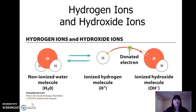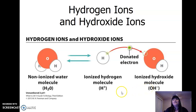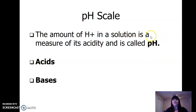pH talks about acidity — how basic or acidic a solution is. Here's a water molecule, HOH or H2O, with two hydrogen atoms and an oxygen. The hydrogens and the oxygen can separate, giving us hydrogen ions and hydroxyl ions. The amount of hydrogen in a solution determines acidity; the amount of hydroxyl ions determines how basic the solution is. We have something called a pH scale — a measurement of whether solutions are acids or bases.